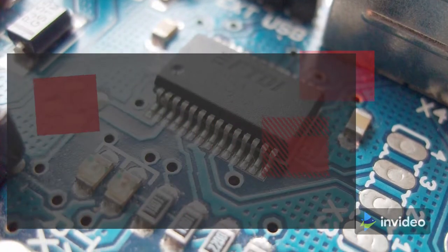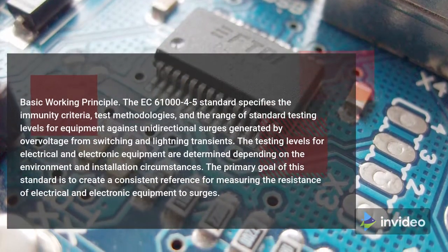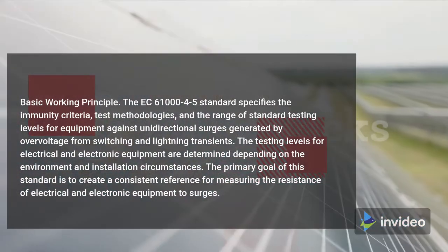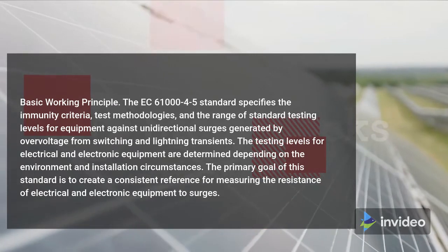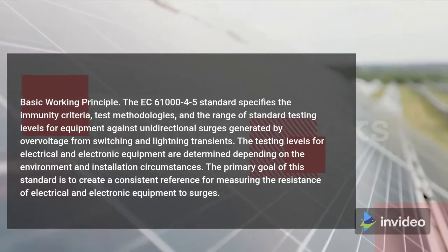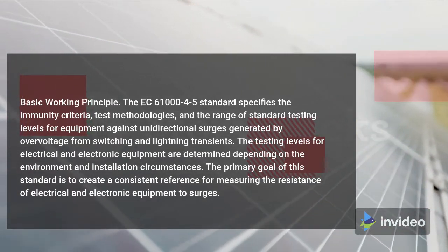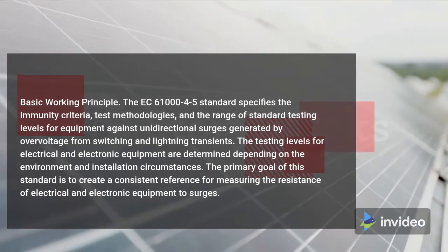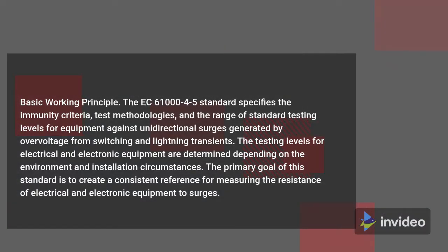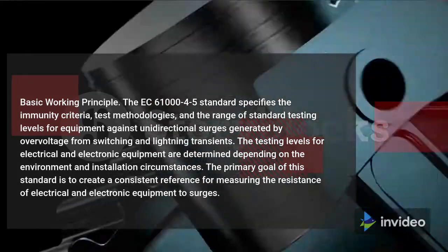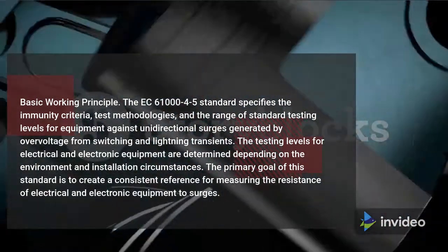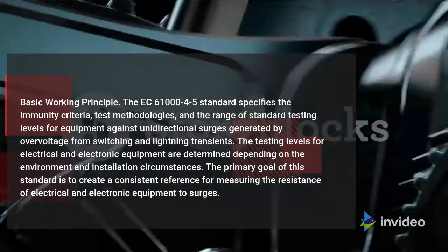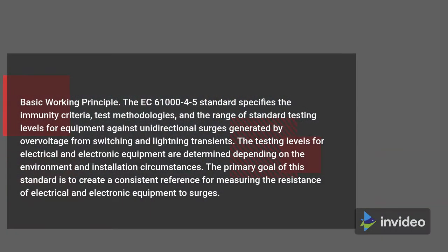Basic Working Principle: The IEC 61004-5 standard specifies the immunity criteria, test methodologies, and the range of standard testing levels for equipment against unidirectional surges generated by overvoltage from switching and lightning transients. The testing levels for electrical and electronic equipment are determined depending on the environment and installation circumstances. The primary goal of this standard is to create a consistent reference for measuring the resistance of electrical and electronic equipment to surges.